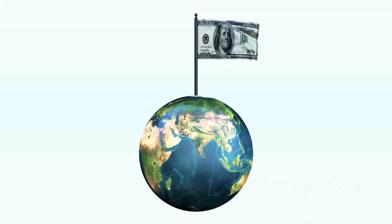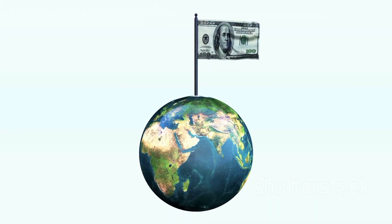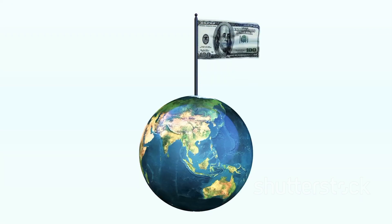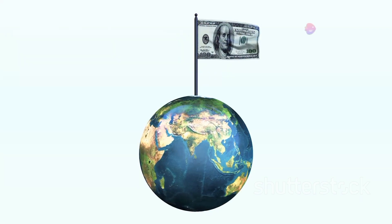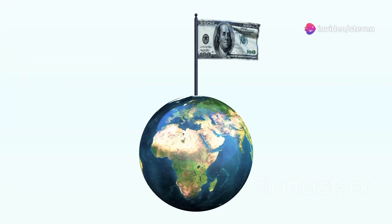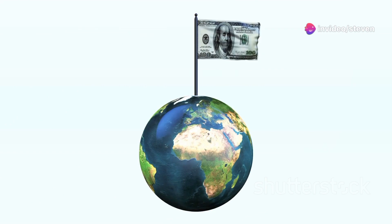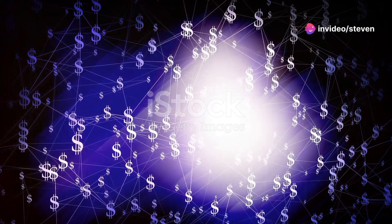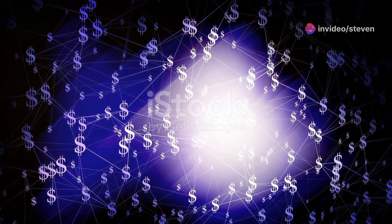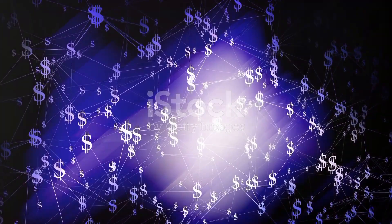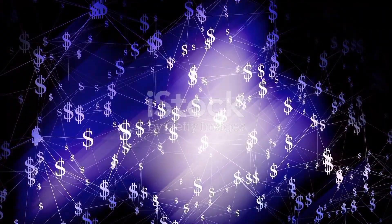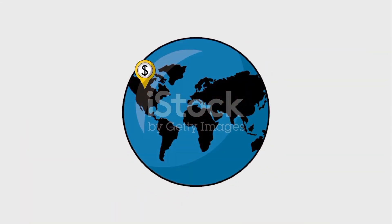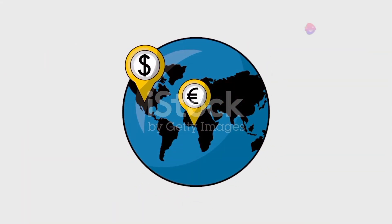Fast forward to 1971, and President Nixon announced the end of the gold standard. The U.S. dollar was no longer backed by gold, but by the strength and stability of the U.S. economy itself. This shift turned the dollar into a fiat currency, which means its value comes from trust in the issuing government.